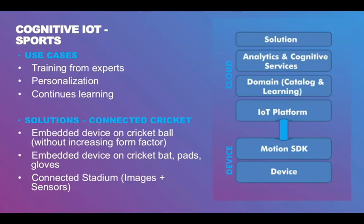Second are embedded devices on cricket pads, bats, and gloves to identify batting strokes and movement. And finally, a connected stadium to capture images of batting strokes and bowling movement. The right posture plays a significant role in delivering a great batting stroke, so combining image and motion data from devices and developing an algorithm to look at both these contexts can provide recommendations and insights to improve a player's game.